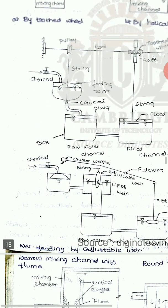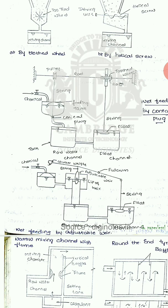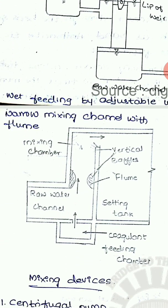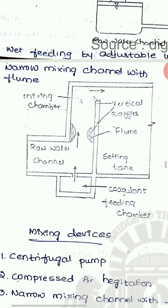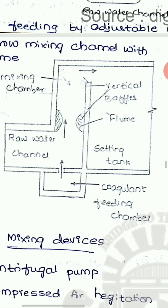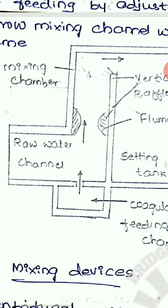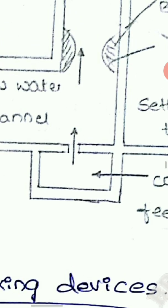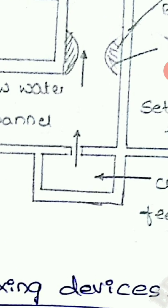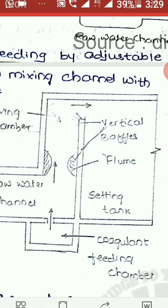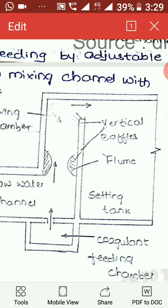These are the different devices — wet feeding devices and dry feeding devices. The next unit is the mixing channel. Here a narrow mixing channel with a flume is used. The mixing chamber is provided; raw water enters through one channel and the chemicals are fed through another chamber, and both are mixed together in this chamber where vertical baffles and flumes are provided.